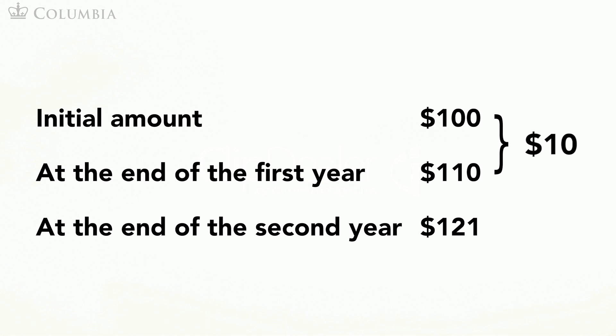Before leaving this section, I want to go back to the example. Note that the gain in the first year is $10, and the gain in the second year is $11. Why is this?